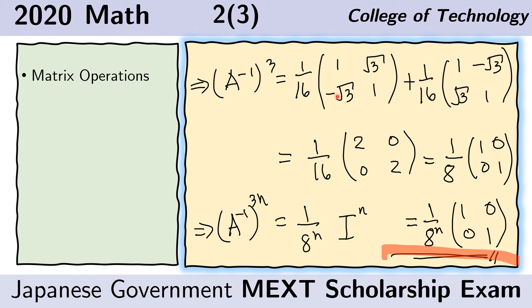We notice that 1 over 16 is common, so we can factor that out. And we notice that we have 1 plus 1, that's 2. This and this cancel to be 0, this and this cancel to be 0. And 1 plus 1 is again 2. So we can again factor out the 2. And so 2 over 16 is just 1 over 8th. And here we have an identity matrix.